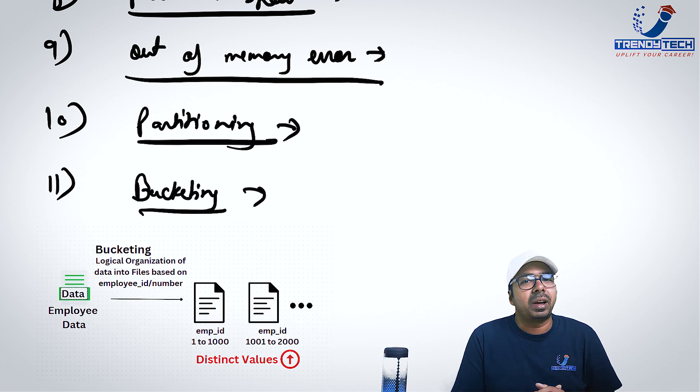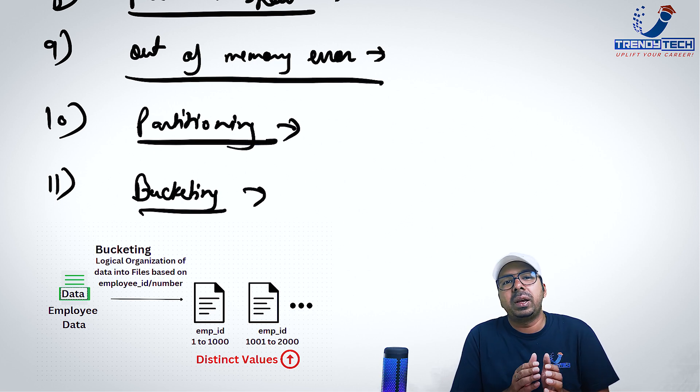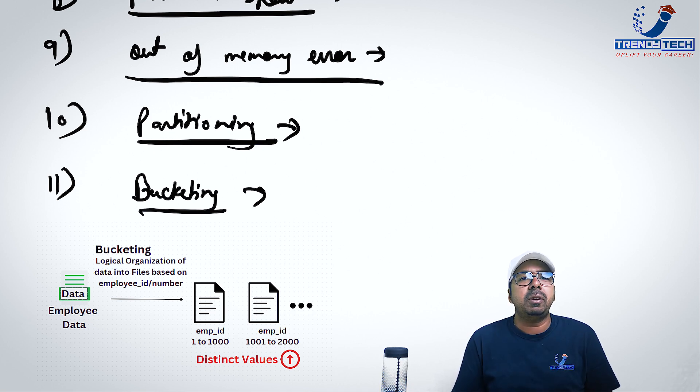Next in our list is bucketing. Bucketing also is somewhat like partitioning, but instead of logically partitioning the data, it is based on some hash value. Now let's say your major filtering is based on employee number or employee ID. Now there are one lakh or millions of employees. Then how easy it is for you to create a partition on it? It's not feasible because you do not want to create one million folders and scan folders. It won't work out. Partitioning works when there are less number of distinct values.